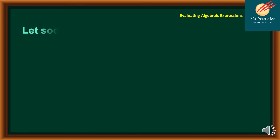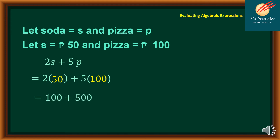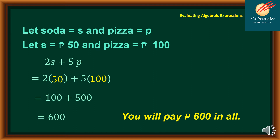Now you move on to another store where the value of soda is 50 pesos while pizza is 100 pesos. You still decided to buy two cans of soda and five slices of pizza. So how much will you pay this time? Using substitution again, we plug in S equal to 50 and P equal to 100. So 2 times 50 equals 100, while 5 times 100 equals 500. Adding together, we have 600. Therefore, you will pay 600 pesos in all. As you can see, the value will change from time to time — this is the meaning of evaluating algebraic expressions. The value will change if the value of the given variable changes.